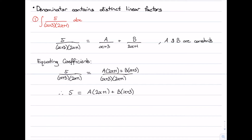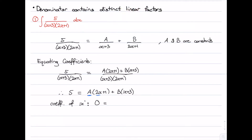Now we look at the coefficient of x on each side. On the left hand side there is no x term, so the coefficient of x is 0. On the right hand side, the coefficient of x comes from multiplying a by 2x and b by x, giving us 2a plus b equals 0. That is equation 1.